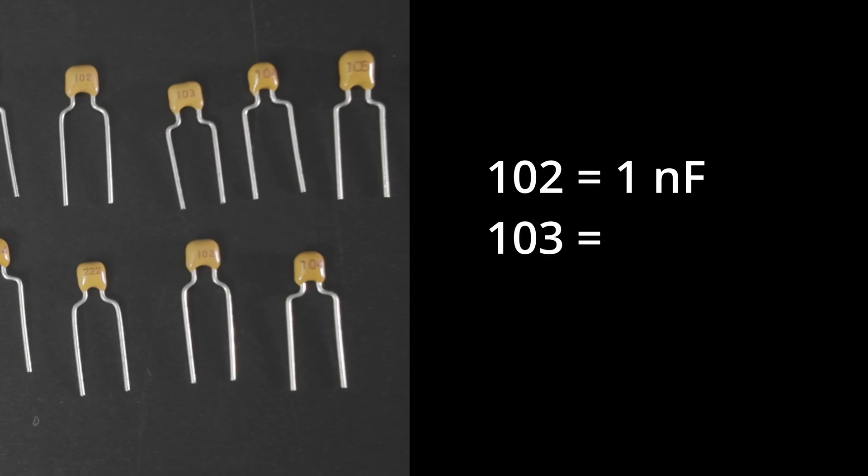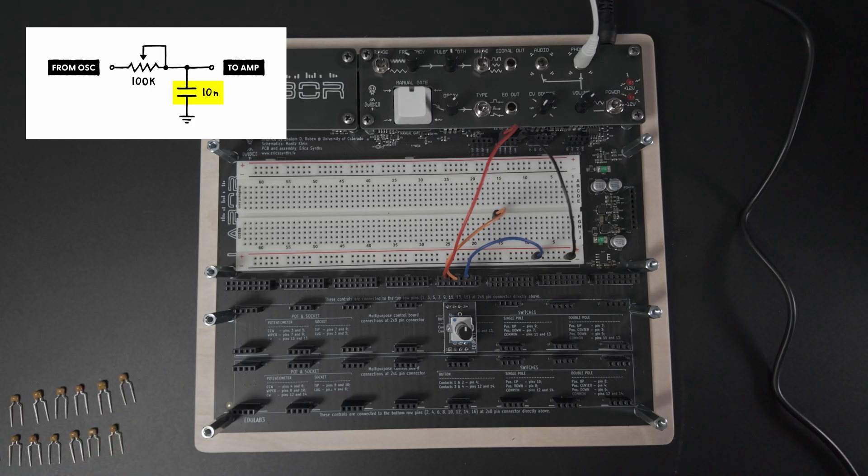103 means 10,000 picofarads, so 10 nanofarads. And 104 means 100,000 picofarads or 100 nanofarads. So long story short, we need the one labeled 103.